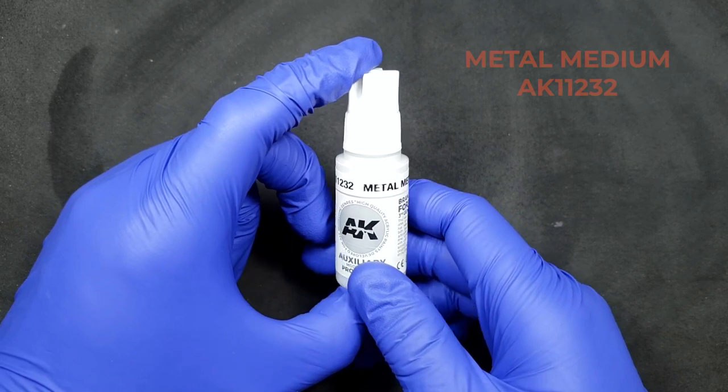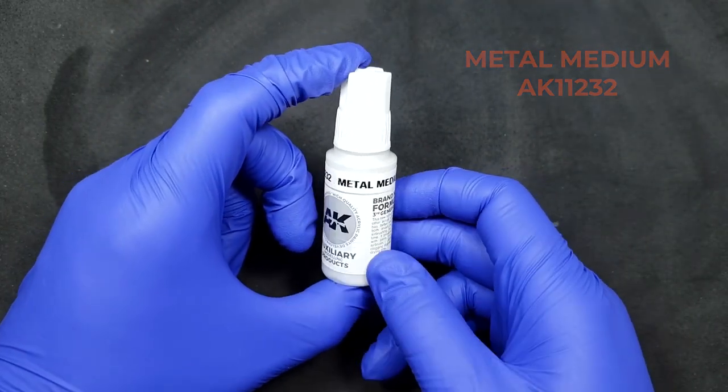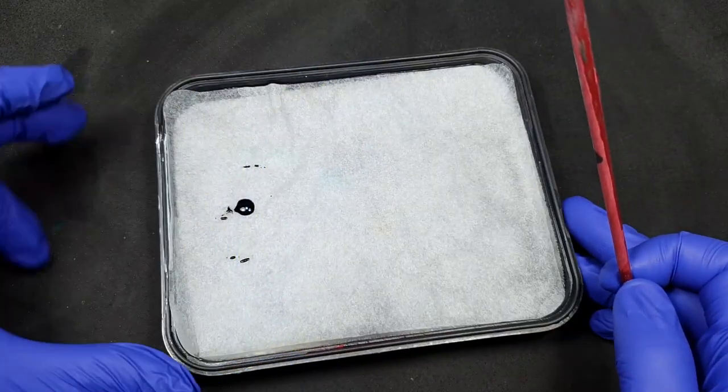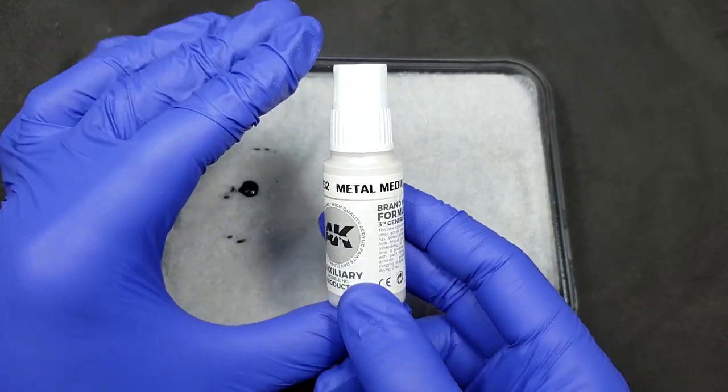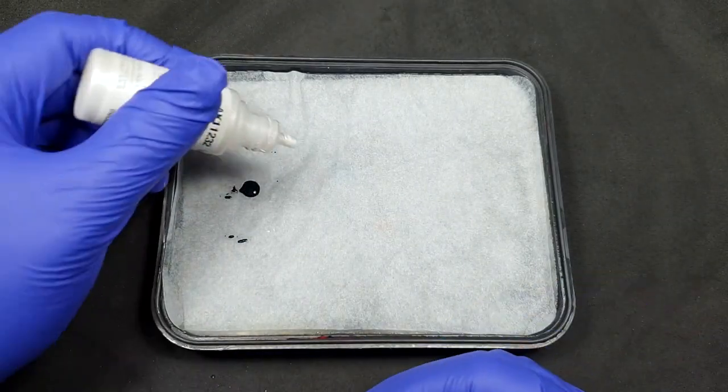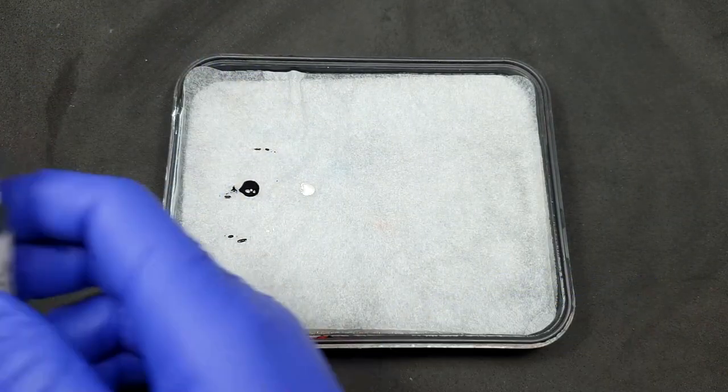Hello friends, today we present to you the metal medium. This product will allow you to transform any of your third generation paints into a metallic paint. As you can see, we have already put a couple of drops of black paint on our wet palette. Now we will also add a couple of drops of metal medium.